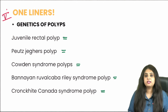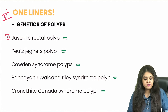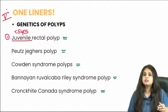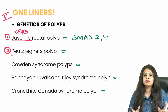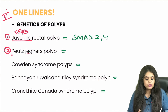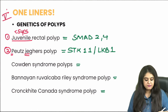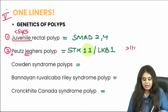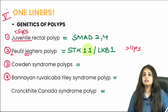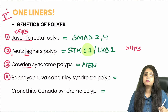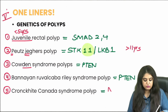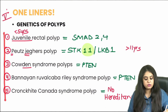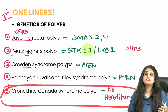Question five covers genetics of polyp syndromes. For juvenile rectal polyp, which occurs in children less than 5 years, the genes are SMAD2 and SMAD4. For Peutz-Jeghers polyp — characterized by mucocutaneous pigmentation and polyps in the jejunum — the gene is STK11, manifesting after 11 years. Cowden syndrome and Bannayan-Riley-Ruvalcaba syndrome both involve the PTEN gene. Cronkite-Canada syndrome has no associated gene — it is the only non-hereditary hamartomatous polyp syndrome.